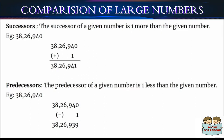Hope you understood. Now let me explain about predecessors. The predecessor of a given number is one less than the given number, which means we subtract one from the given number. For example, when we subtract one from 38,26,940, we get the predecessor, which is 38,26,939.